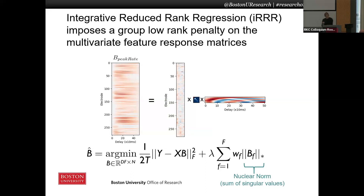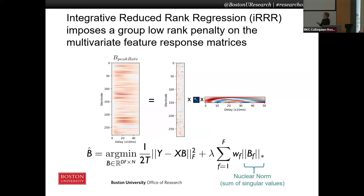We can build that low-rank assumption into our regression using what's called a nuclear norm penalty — a group nuclear norm penalty — which will cause the matrix to be sparse in its singular values. If you know about lasso or L1 regression, this is like that, only it's doing it on the singular values, which encourages this matrix to be low-rank instead of sparse in its elements.